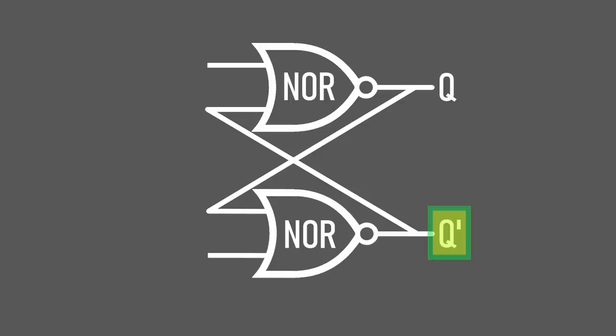The bottom NOR gate though isn't just Q, it's Q with an apostrophe. That's written as Q' and it just means that it's the opposite of Q. So if Q is a 1, Q' is a 0, and if Q is a 0, Q' is a 1. It's what would happen if we ran Q into an inverter.